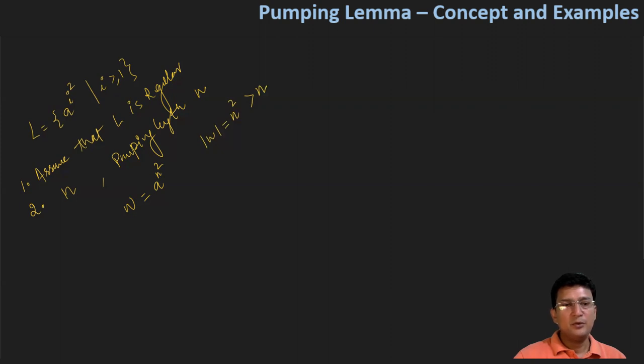Now if we assume that the value of n or the pumping length P is actually 3, the string we get will be equal to a^(3²), which means a raised to the power 9. It means this will be 9 times a. Now out of this, since we assumed pumping length is 3, this means this is the x part, and let's say this is the y part, and the remaining part is z.